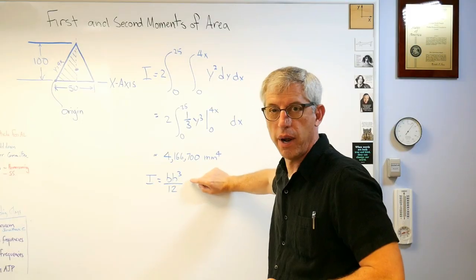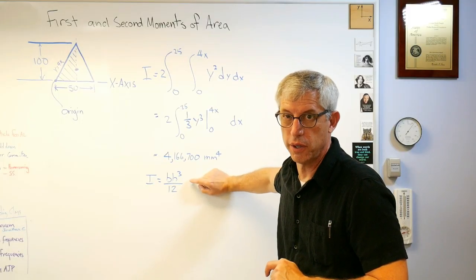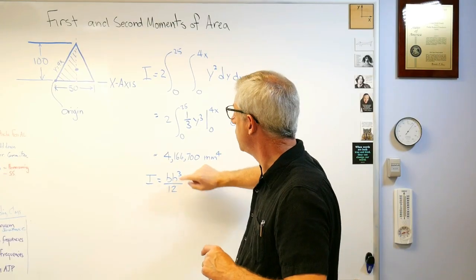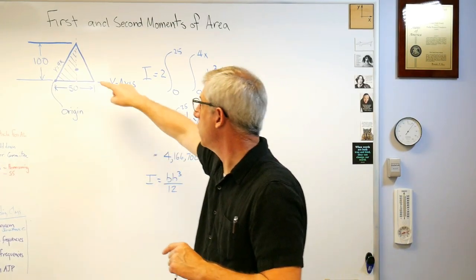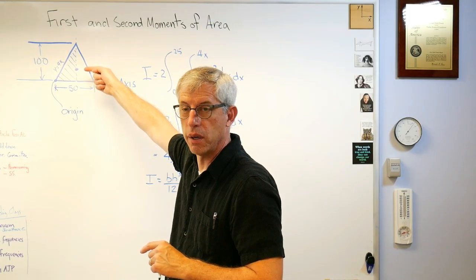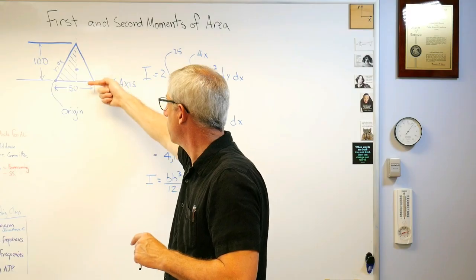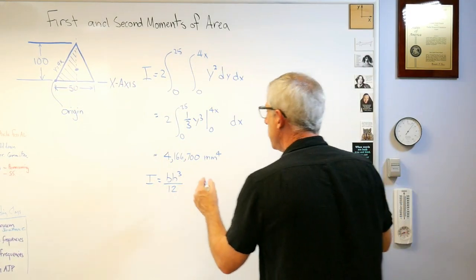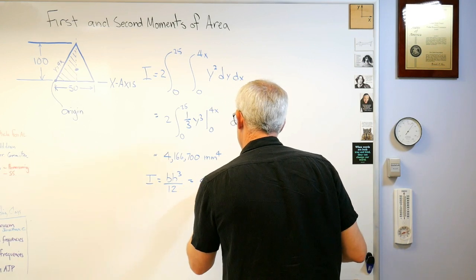Because we're measuring the area moment of inertia of the triangle from the bottom, this really is the tabulated value. So this is correct. It looks like the area moment of inertia of a rectangle, but in this case it's also the expression for the area moment of inertia of the triangle because we're not measuring it with respect to the axis going through the centroid, we're measuring it through the axis at the bottom here.